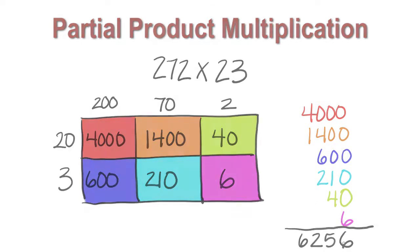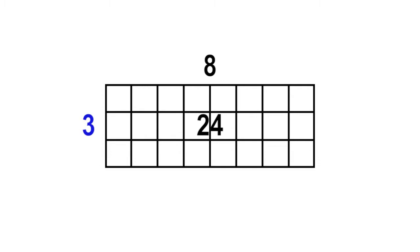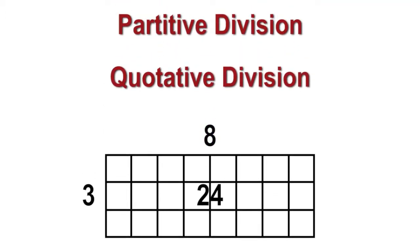Now let's try a division problem. In division, the dividend represents the total, and the divisor and the quotient represent the factors. The divisor represents the number of groups or rows, and the quotient represents the size of each group, or the number of columns. There are two models for division: partitive, or fair sharing, and quotative, or measurement.